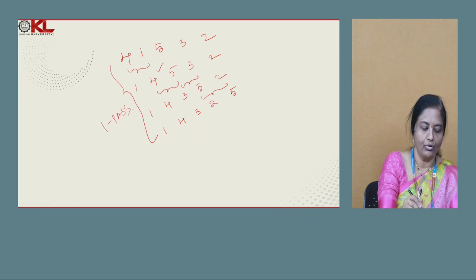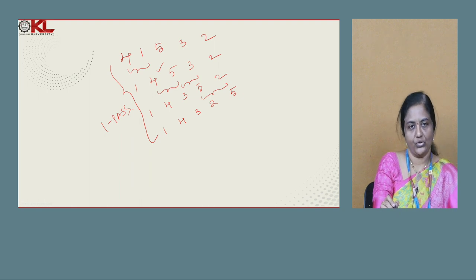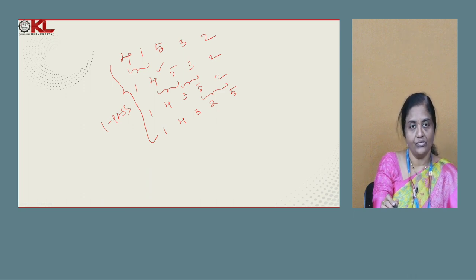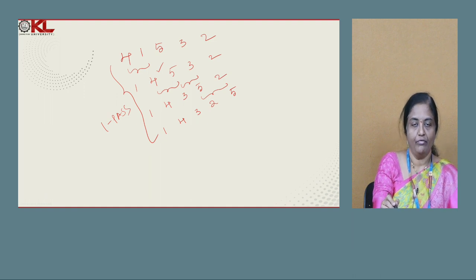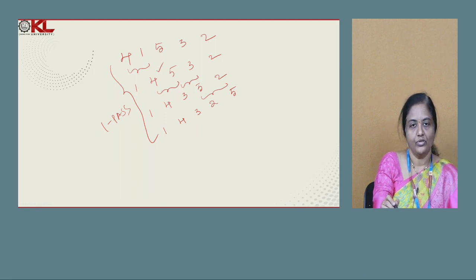This is the result after your first pass, and you have to repeat this n times. How many passes for this example? You have 5 passes, since the input size is 5. Even though sometimes your array gets sorted in between, you have to perform the same process 5 times.